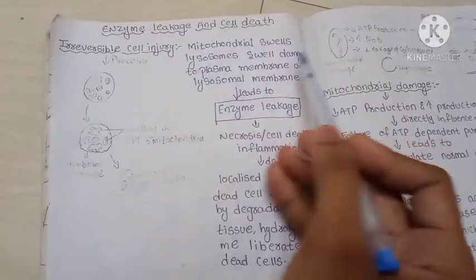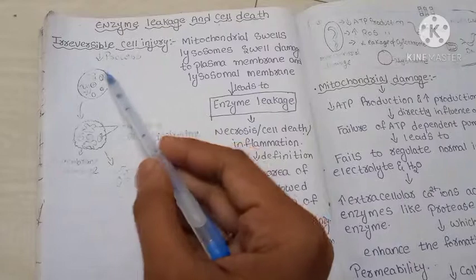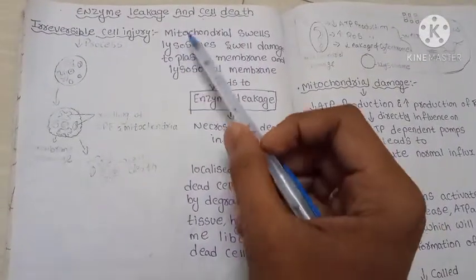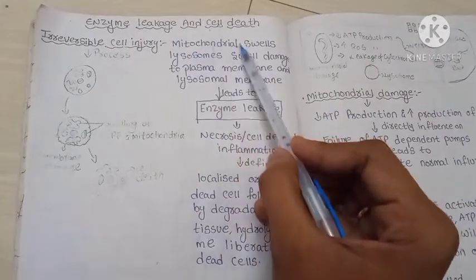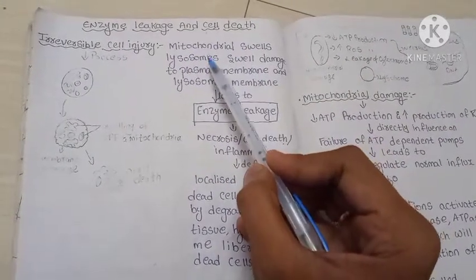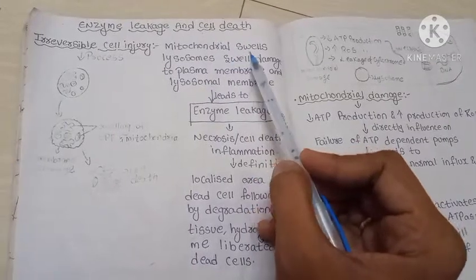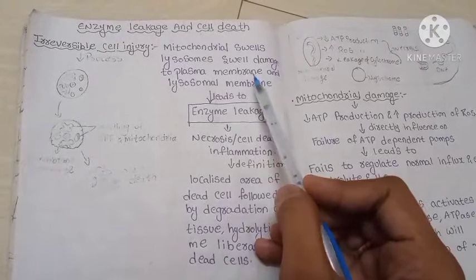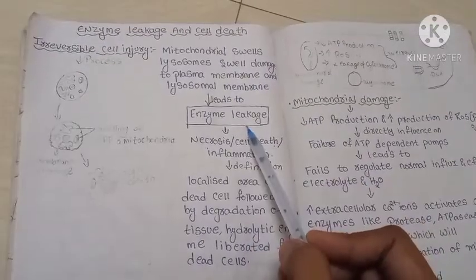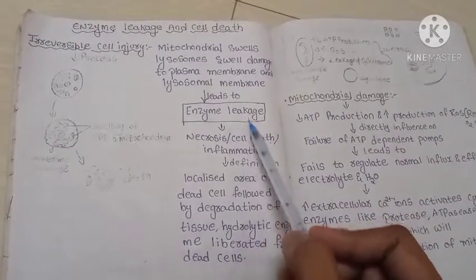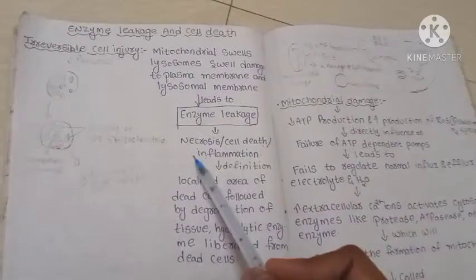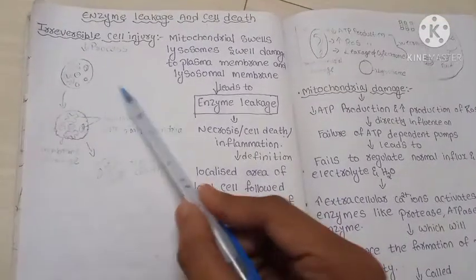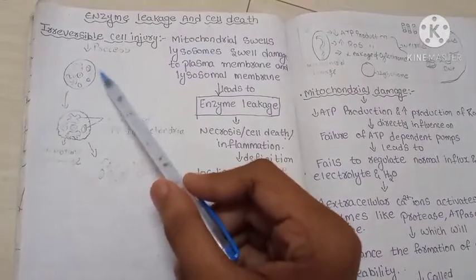Enzyme leakage and cell death is an irreversible cell injury. In this process, mitochondria swell and lysosomes are damaged, which leads to damage of the plasma membrane and lysosomal membrane. This leads to enzyme leakage, and due to enzyme leakage there will be necrosis, inflammation, or cell death.